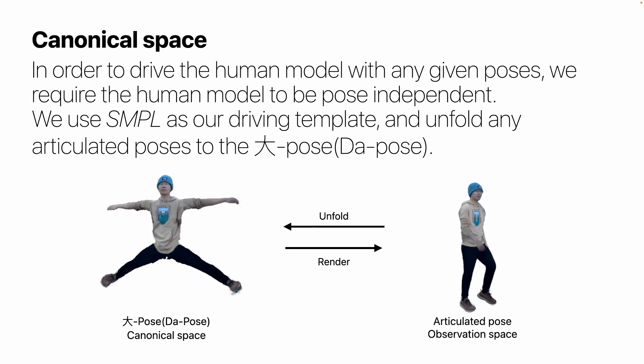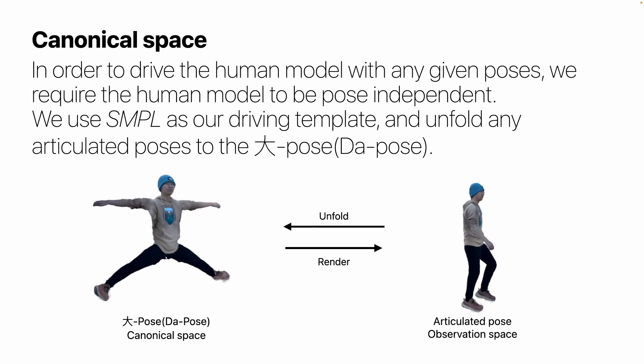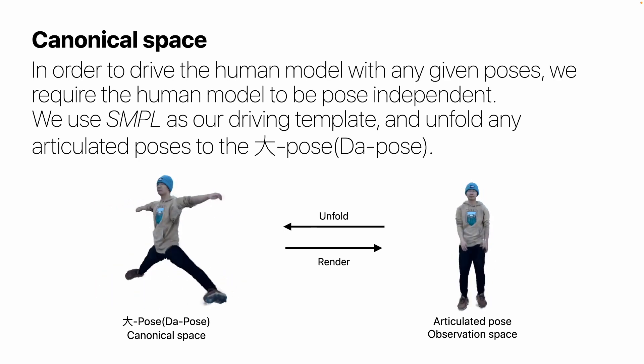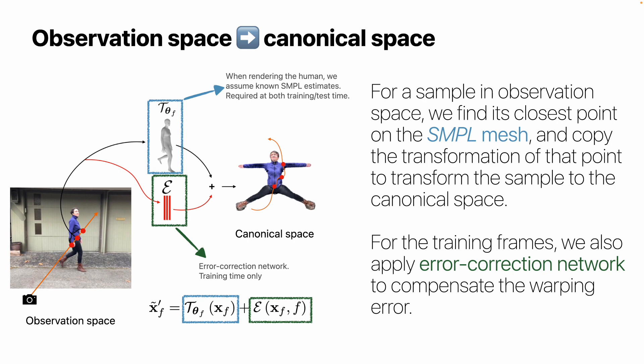We need a warping field to transform the points from the observation space to the canonical space. For a sample in the observation space, we find its closest point on the SMPL mesh, and copy the transformation of that closest point to transform the sample to the canonical space, as shown in the blue boxes.